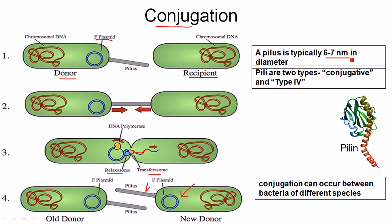The pilus is typically six to seven nanometers in diameter. There are two types of pili: conjugative and Type 4. The pilus is composed of an enormous amount of protein called pilin. This type of conjugation can happen between bacteria of different species.